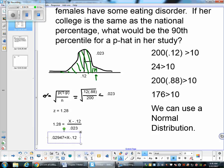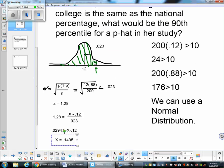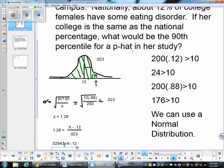And then when I add 0.12 to that, I get my x value is equal to 0.14947. So about 15% would be the 90th percentile.